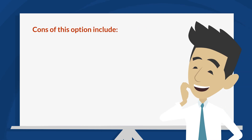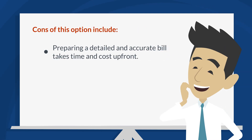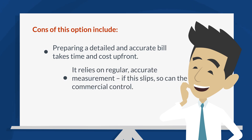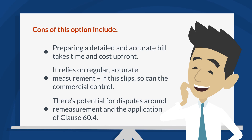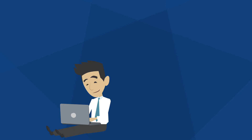Cons of this option include: preparing a detailed and accurate bill takes time and cost up front; it relies on regular, accurate measurement — if this slips, so can the commercial control; and there's potential for disputes around remeasurement and the application of clause 60.4.